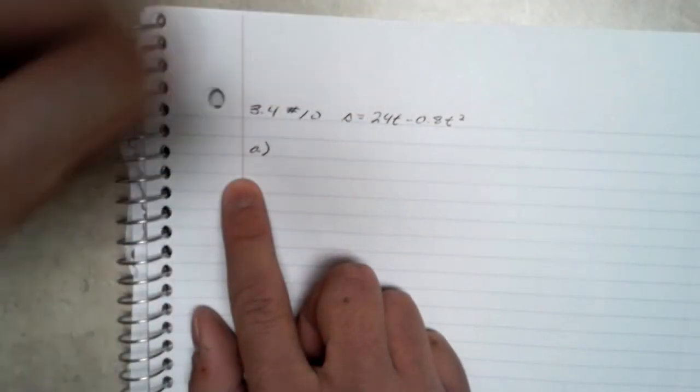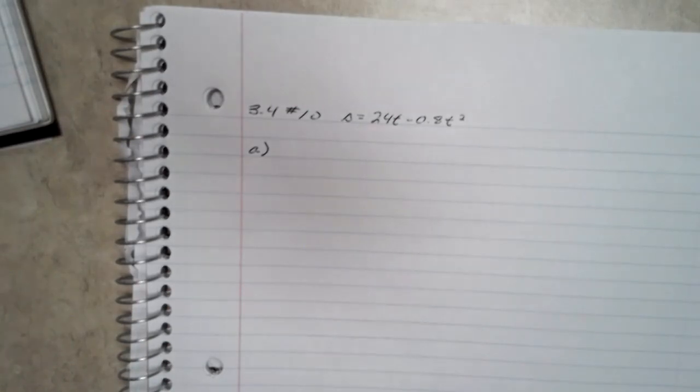Letter A is asking, find the rock's velocity and acceleration at time t.